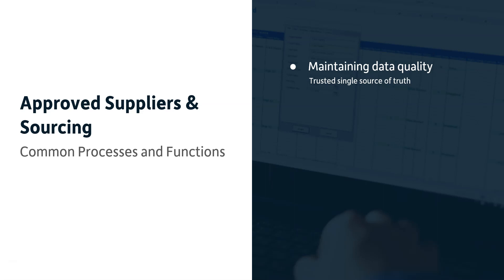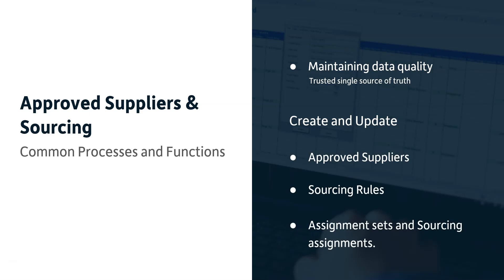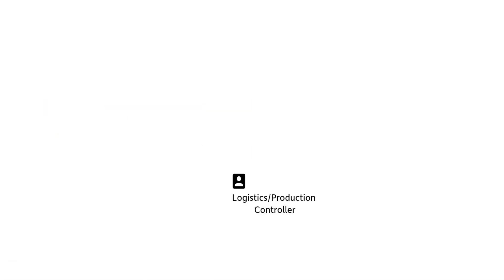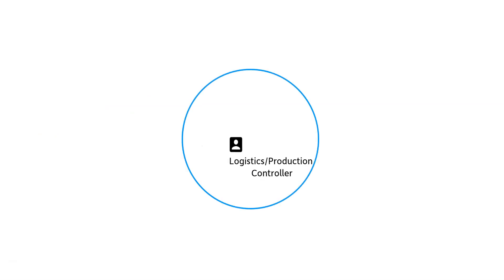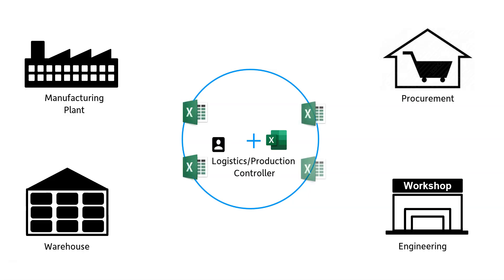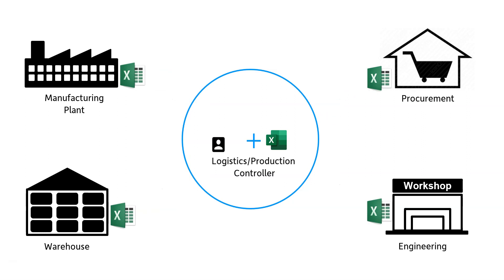Common processes include maintaining data quality and a trusted single source of truth, with create, update, and sometimes delete functionality for approved supplier lists, sourcing rules, assignment sets, and sourcing assignments. A logistics controller needing to ensure items are sourced correctly has to interact with many different areas and send spreadsheets out. With Morpher Apps, we make that easy — it's all in one spreadsheet: the Sourcing Wizard.